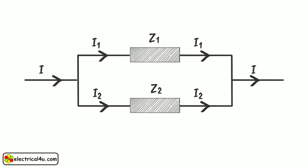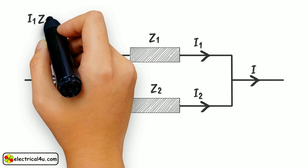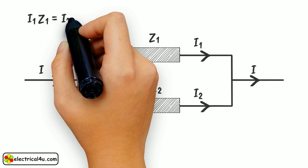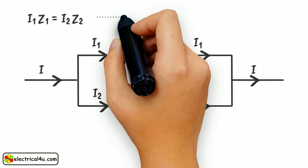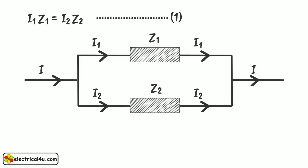Hence, we can write I1 into Z1 equal to I2 into Z2, and this is voltage drop across Z1 or Z2.